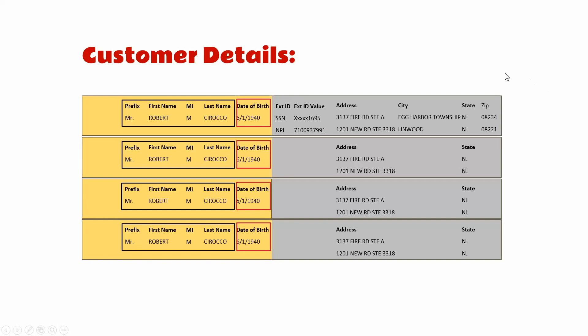I see there are four entries. If you look at them with the naked eye, they appear to be the same individual, but the system returns four individual records by the name Robert M. Siraco.